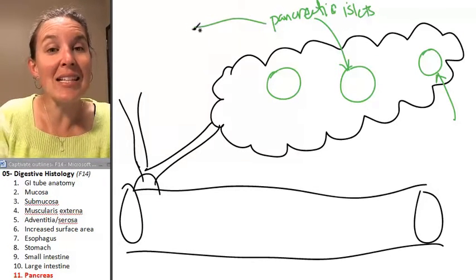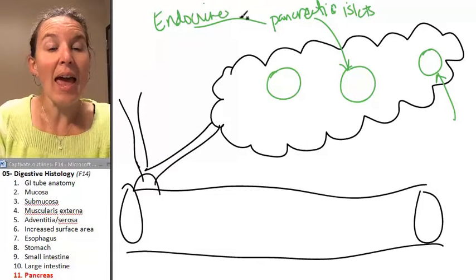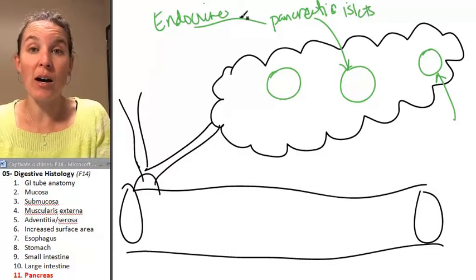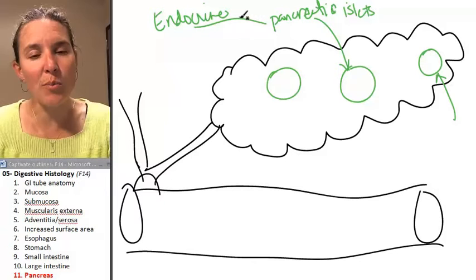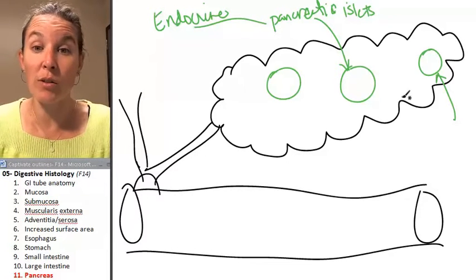And these guys are your endocrine structures and they produce insulin. And they also produce glucagon. But both of those hormones are involved in glucose homeostasis.